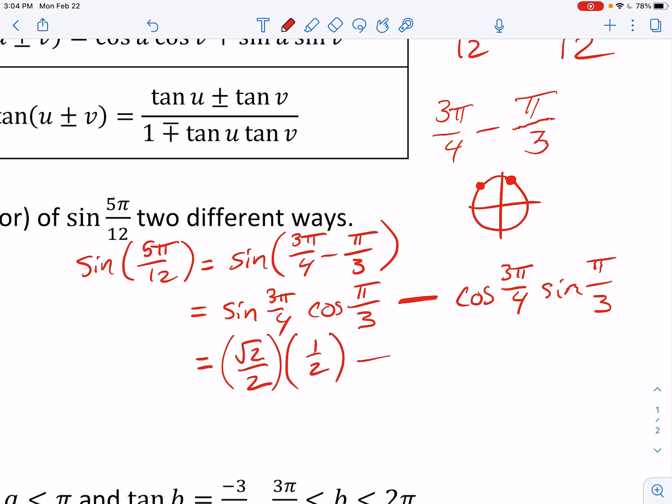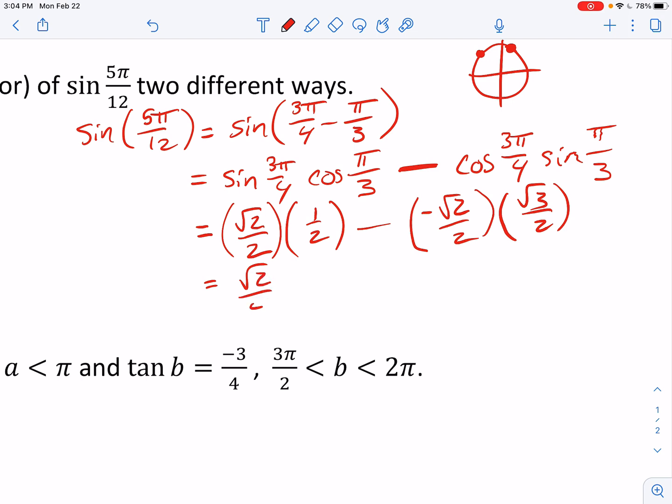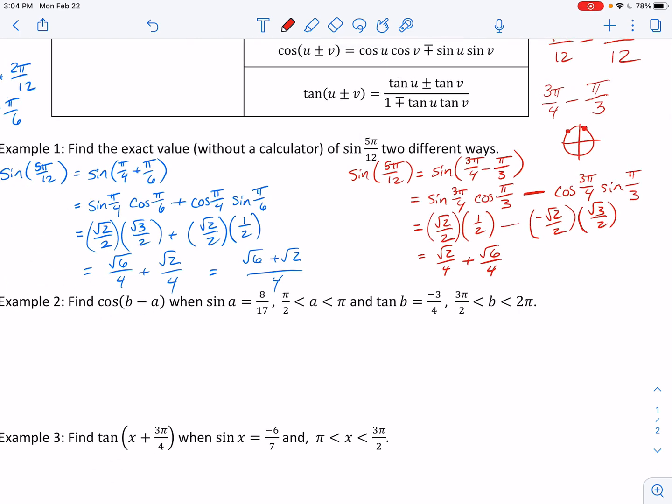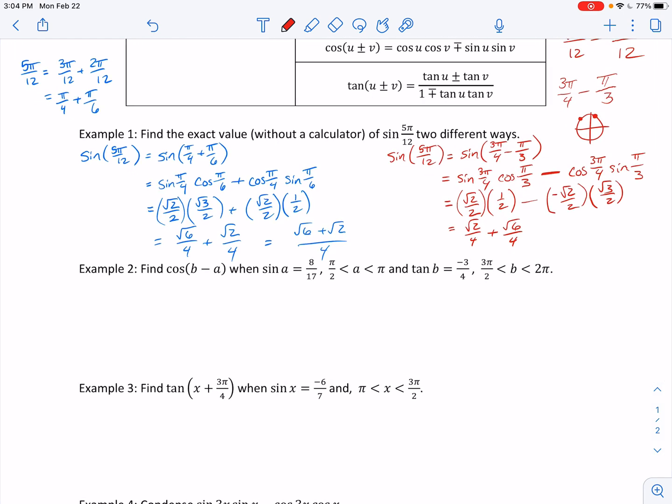And notice we get root 2 over 4 plus, because there's a negative times a negative, root 6 over 4, and hopefully we get the exact same thing that we got just a second ago. Okay, so far so good. Let's move on. I went to right and green.